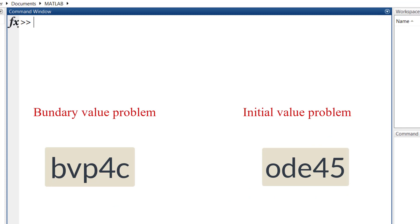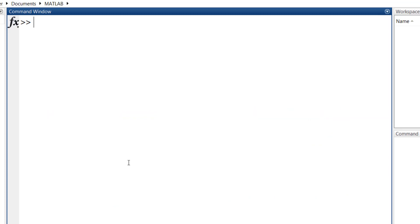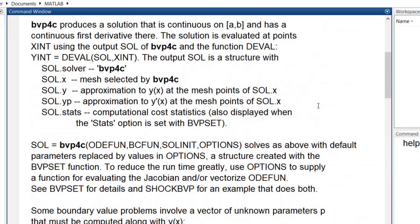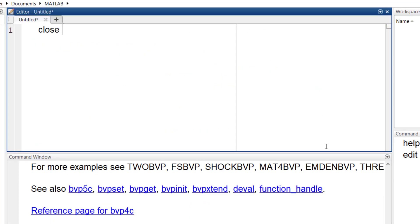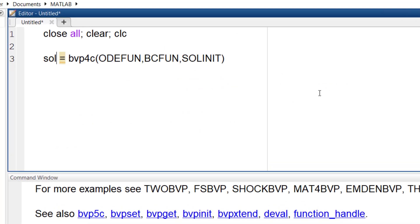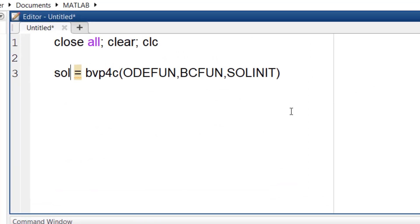To solve boundary value problems we use this solver, bvp4c. I type help bvp4c and here is the general form of using this solver. This solver can only have one output argument which we name sol here and it takes three arguments: the equation, the boundary condition and the initial guess.